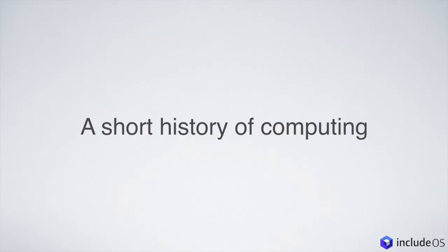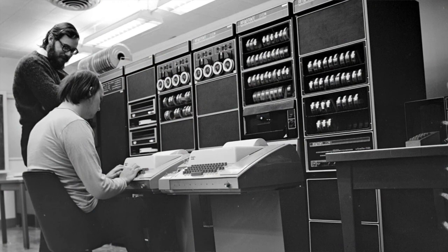We should start off with a short history of computing — basically why we are where we are today. On the picture here you see a PDP-11. These are Ken Thompson and Dennis Ritchie working on Unix back in 1972. This was the computer where Unix was born, and these were very expensive machines — like $5 million a piece. Naturally, if you wanted one you couldn't really have one by yourself; you had to share it with others, and that became sort of the first attempt at virtualization of an interactive system.